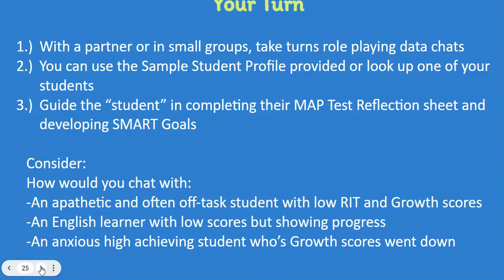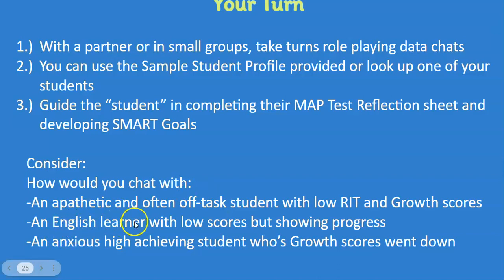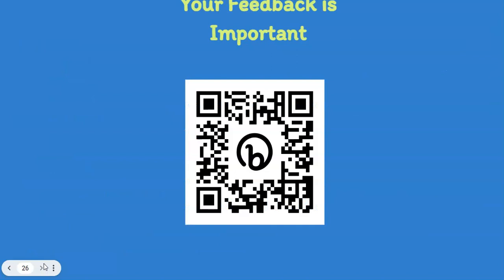If this were a live presentation, I'd have you practice with a partner: consider different tones and what you might include depending on the student. For a student who is apathetic and often off task with low RIT score and growth, maybe you need a one-on-one contract or some incentives — 'if you do better on this Friday's quiz, here's what happens.' For English learners working really hard but with low scores, you'd talk about growth. For the anxious high-achieving student who wants a hundred percent, you have to explain that this test measures growth and learning, not just getting an A.